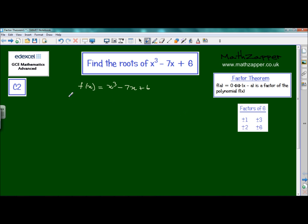So we'll start with f(1). Now, let's do a quick reminder before we do this. The Factor Theorem says f(a) = 0 if and only if (x - a) is a factor of the polynomial f(x).